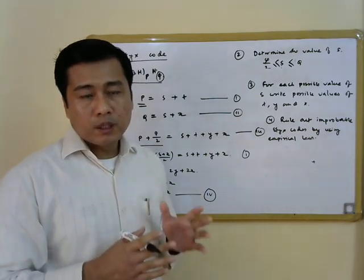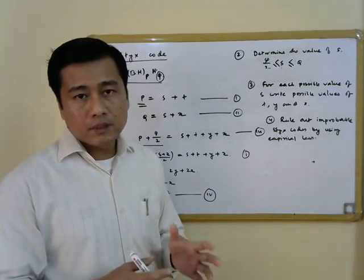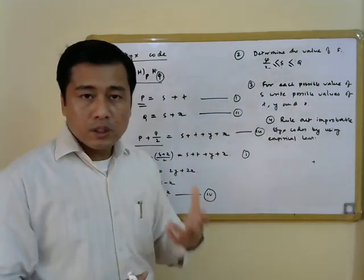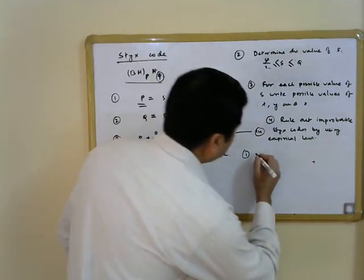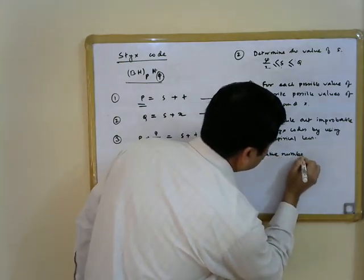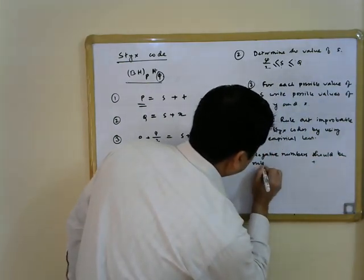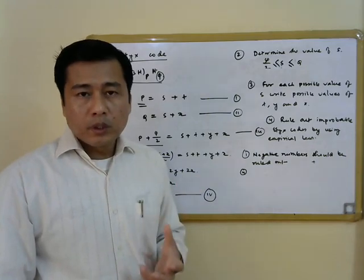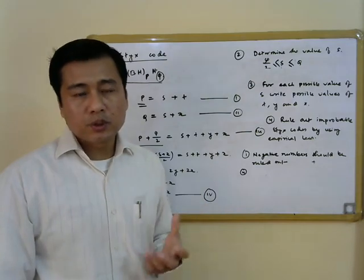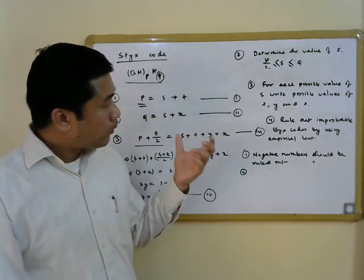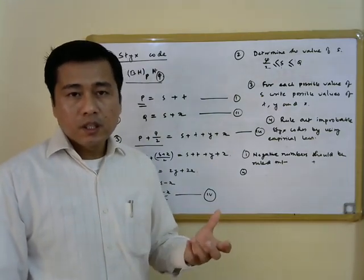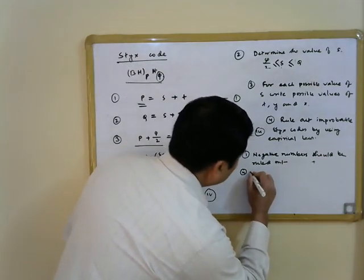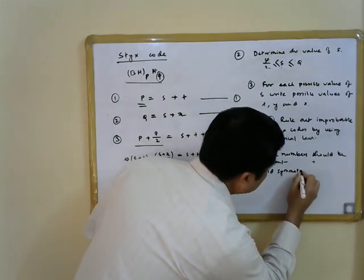The empirical laws for ruling out improbable STYX codes are as follows. First, all numbers in the STYX code must be positive — negative values are improbable and that STYX code should be immediately discarded. Second, most borane molecules have twofold symmetry, so if a proposed structure does not exhibit twofold symmetry, that STYX code can be ruled out.